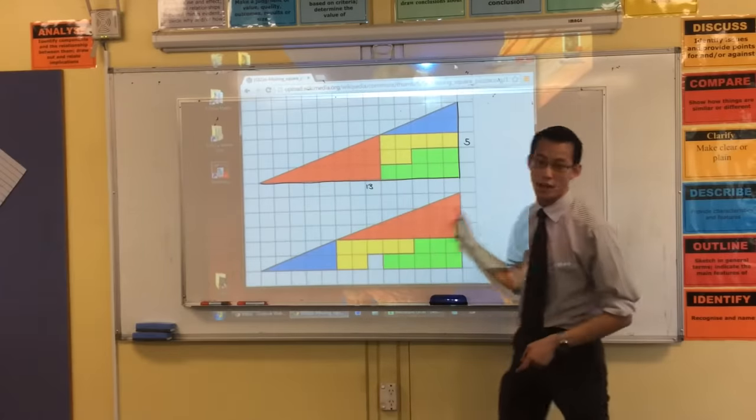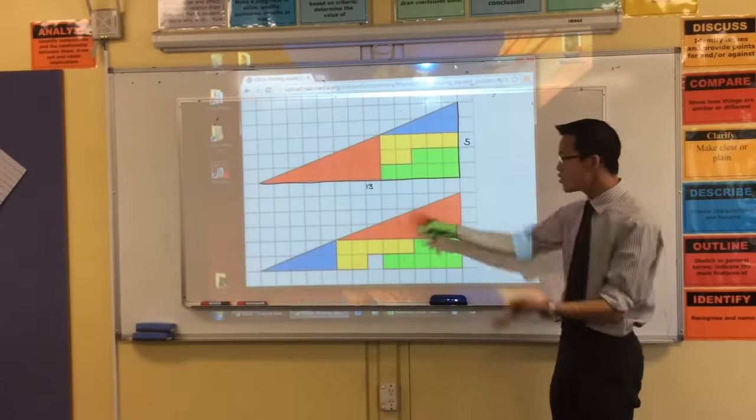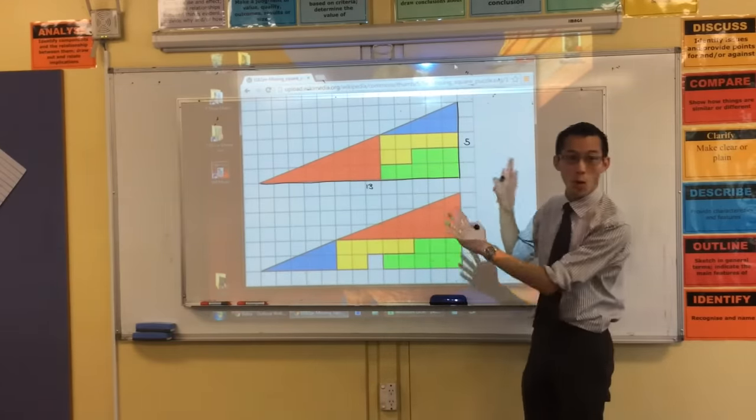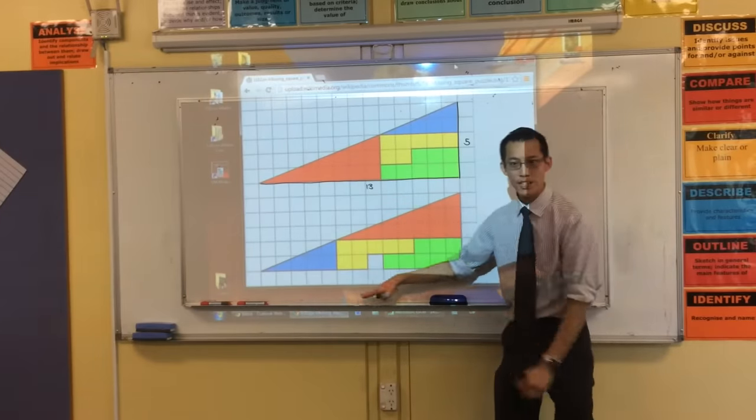So you have this 5 by 13 triangle. Now in the animation, and you can verify, you can see what's going on. These two pieces have swapped, but then these two pieces have been rearranged a little bit.